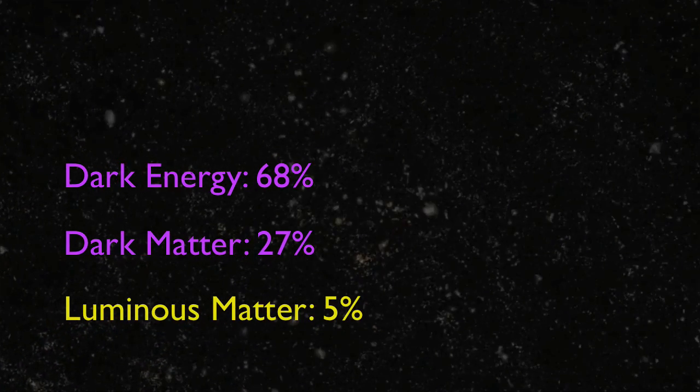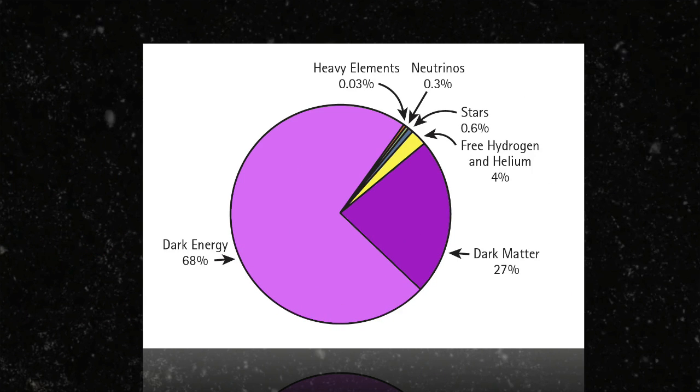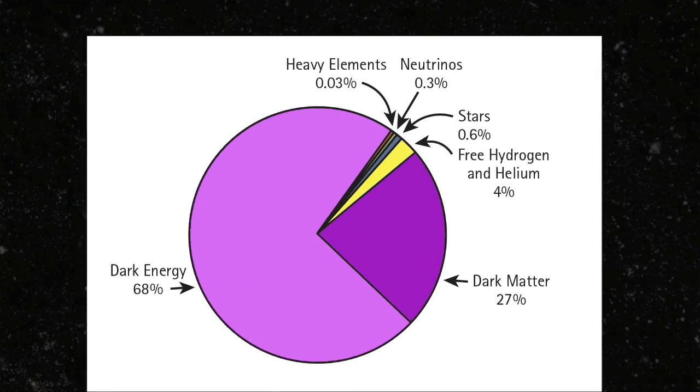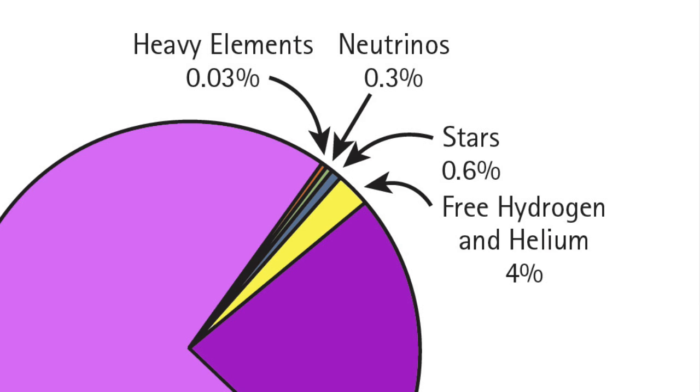Let's look at this in a pie chart. Of that 5%, we see most of it is free hydrogen and helium. The elements that make us, such as carbon and heavier elements, are really, really rare.